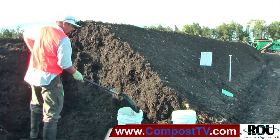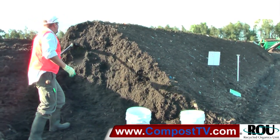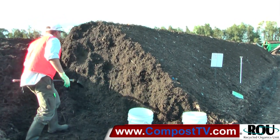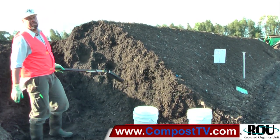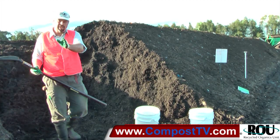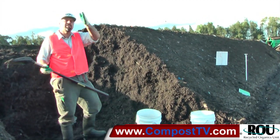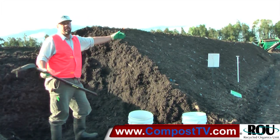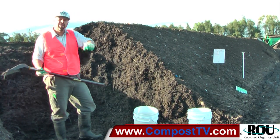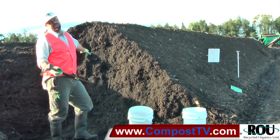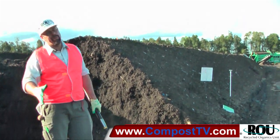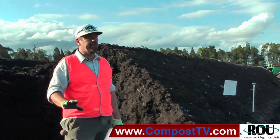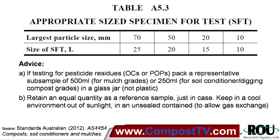I'll take samples from here, here, here, and here — effectively getting coverage from the entire cross-section area. On this windrow I'll do this at three different sampling sites, ending up with five samples from each site, three sites, fifteen samples each at four liters — a total of about 60 liters of material.